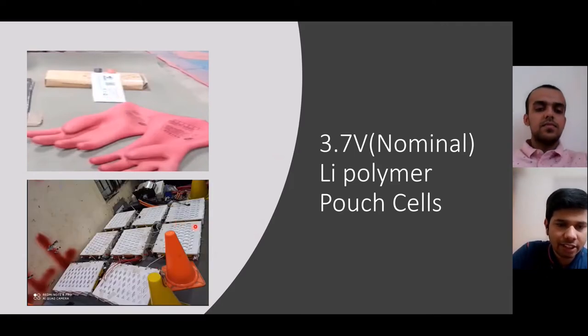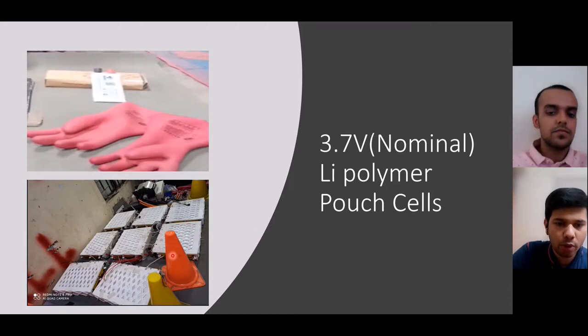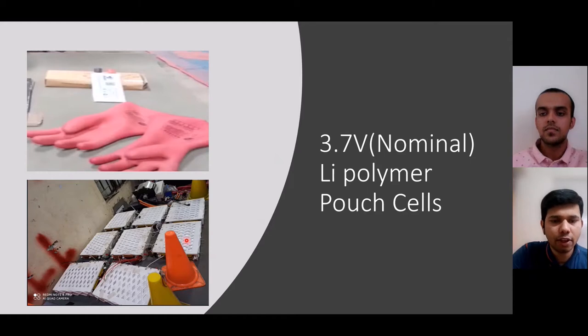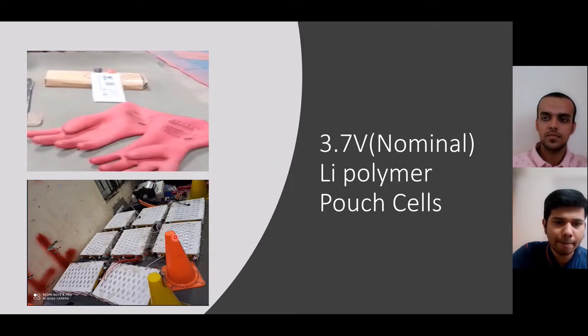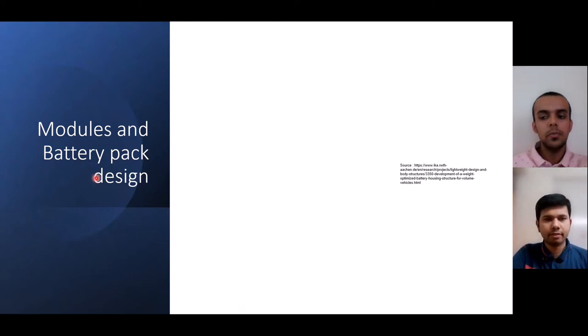These cells are then stacked together into a module. This module has a configuration of 12s2p - that is, 12 such cells are placed in series and two such series are then placed in parallel. Eight modules are stacked together to form a battery pack.